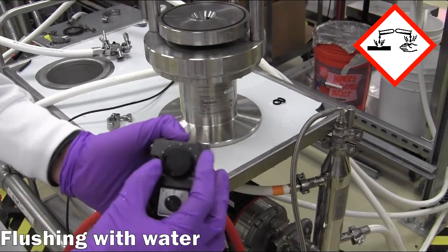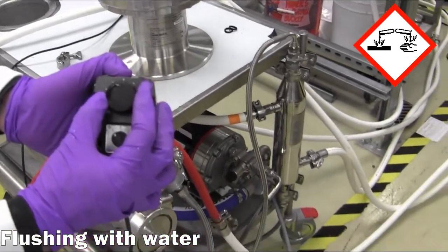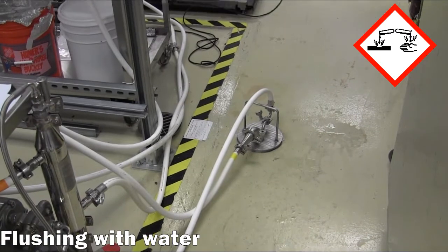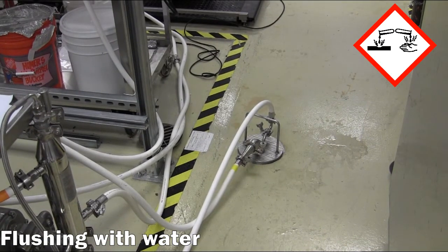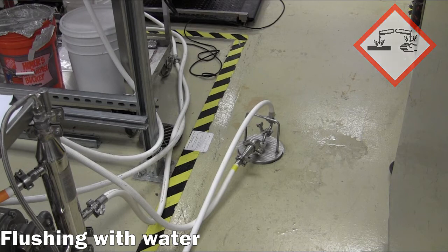Now, the permeate and retentate lines are routed to the floor drain manifold and fresh water is introduced to the feed bucket. The system will continue flushing with fresh water until a neutral pH is reached on the permeate outlet stream.